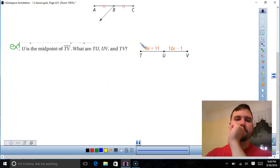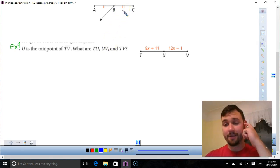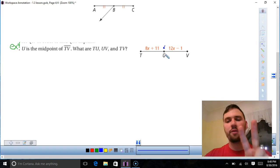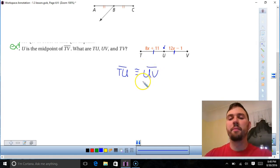So let's do our last example. TUV. So U is the midpoint of TV. Find TU, UV, and TV. So U is the midpoint of TV. If it's the midpoint, it cuts that segment into two equal parts. So TU is congruent to UV. So if they're congruent, that means their measures are equal. So I can take and set this equal to this, because they're equal, they're the same measure. So that's what I'm going to do.